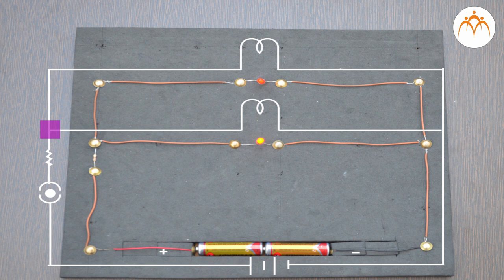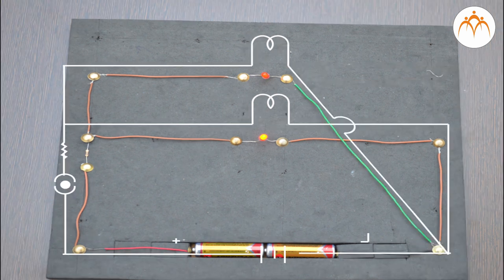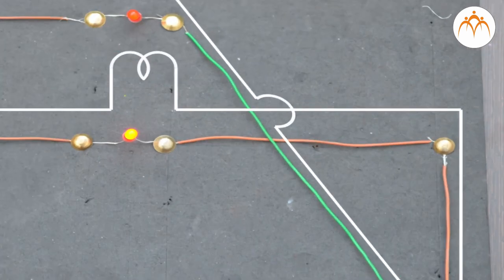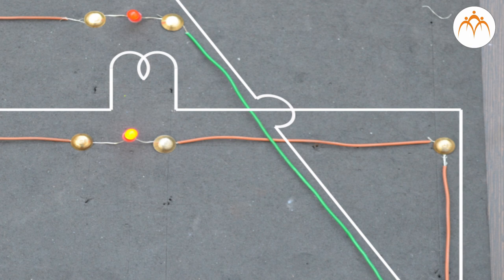This junction indicates that wires are connected. For crossing wires that are insulated from one another, a small semicircle symbol is commonly used to show one wire jumping over the other wire.